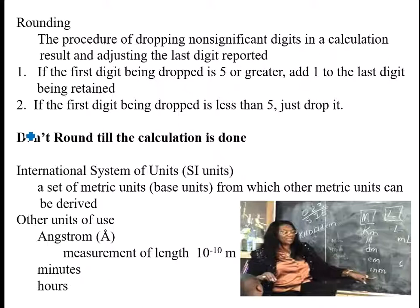It's a set of what we called metric units or base units that we can derive other units from. Other units commonly used are things like angstroms, which is a unit of measurement you see in physics. Minutes and hours are also units that are not part of the SI system.